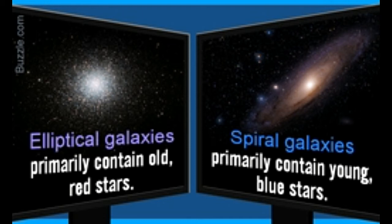Their shape and color are not the only things you ought to consider when you pick elliptical galaxies versus spiral galaxies to see how they differ from each other. The difference between them goes well beyond these superficial aspects.